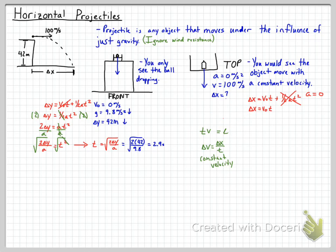Plugging things into our equation: Δx = v₀ × t. Our velocity is 100 meters per second coming out of the cannon, and it stays constant at 100 m/s. Our time is 2.9 seconds. So the distance the cannonball travels is 290 meters.